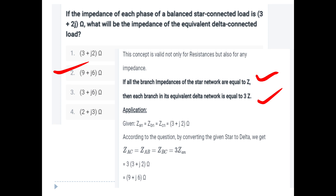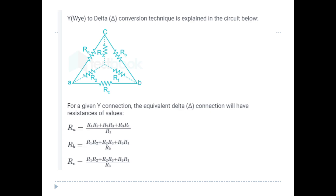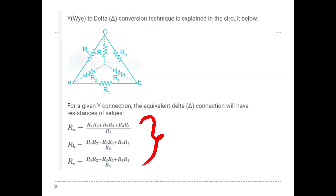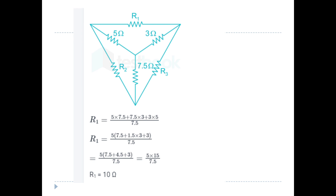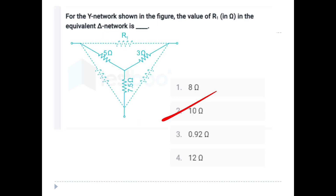Find the Y network shown in the figure with the value of R1 in the equivalent delta network. For the delta connection, the resistances will be equal. Using the formula R1 equals RA plus RB plus (RA times RB divided by RC), we can solve. The sensitivity of R1 equals R2 times R3.